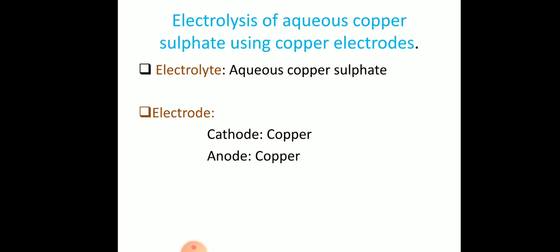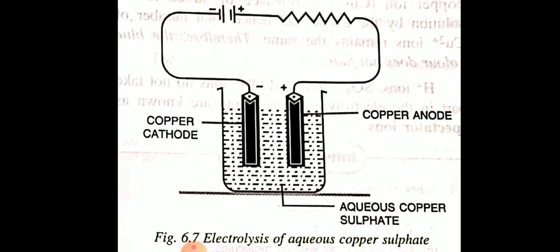Next is electrolysis of aqueous copper sulfate solution using copper electrodes. The electrolyte used is aqueous copper sulfate solution, CuSO₄. The electrodes used are copper — both cathode and anode are made of copper — and they are not inert electrodes.